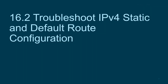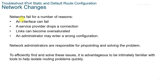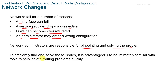16.2 Troubleshooting IPv4 Static and Default Route Configuration. Networks fail for a number of reasons: an interface can fail, a service provider drops a connection, links can become oversaturated, or an admin may enter a wrong configuration. Network administrators are responsible for pinpointing and solving these problems. To efficiently find and solve these issues, it's advantageous to be familiar with tools that help isolate routing problems quickly.